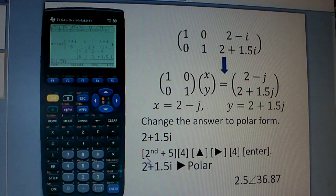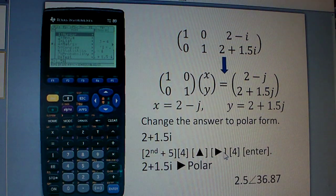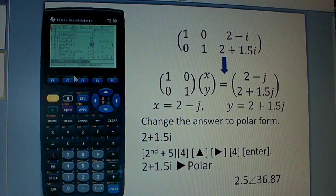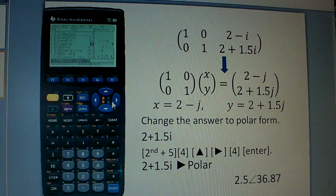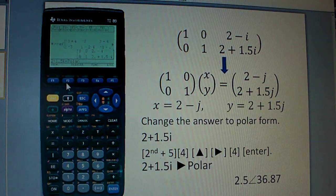And then, to convert this into polar, you do second 5, that goes to math. Press 4, go up 1 to get to the vector operations. And then, you go 1 to the right, and press 4, that changes into polar.